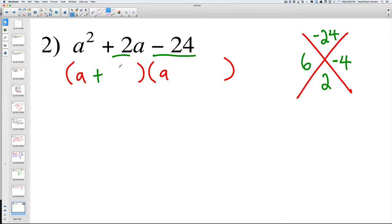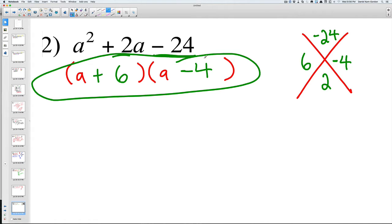So we need two numbers that multiply to negative 24 and add to 2. If we use 6 and 4 and we make the 4 negative, that basically makes it 6 minus 4, that's going to equal 2, and 6 times 4 equals negative 24.